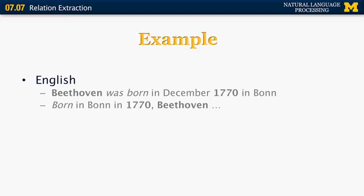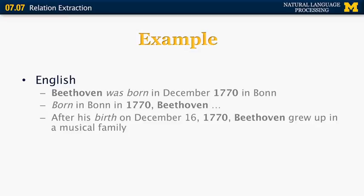There are other ways to express the same relation. For example, born in Bonn in 1770, Beethoven, or after his birth on December 16, 1770, Beethoven grew up in a musical family. You can see that it's not always the case that the clue phrase like in this case born and birth have to appear between the two words that we're trying to link. They can appear outside of them, but usually they appear somewhere nearby. Here's one more example, Ludwig van Beethoven, left parenthesis 1770, 1827, which are his birth year and year of death.